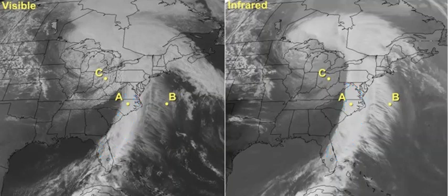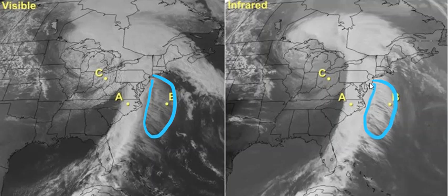Now let's look at point B, located in the area of feathery clouds over the Atlantic. Obviously, these feathery clouds are not as bright as the area of cumulonimbus on visible imagery, which means the clouds at point B are much thinner. On the infrared image, these clouds appear bright white, meaning that they have cold tops which are high in the troposphere. Therefore, they must be cirrus clouds, which are high and thin.